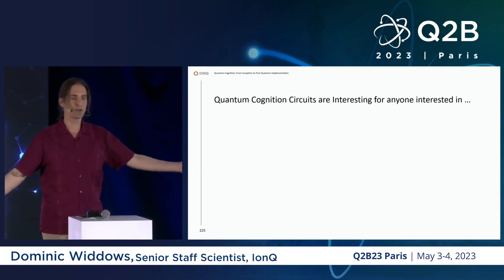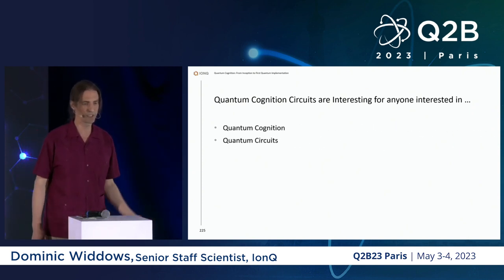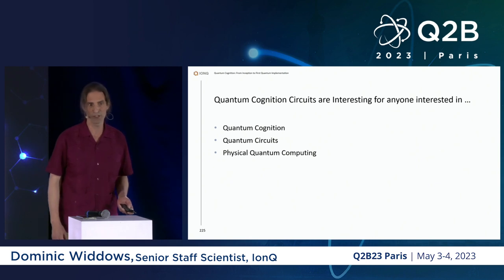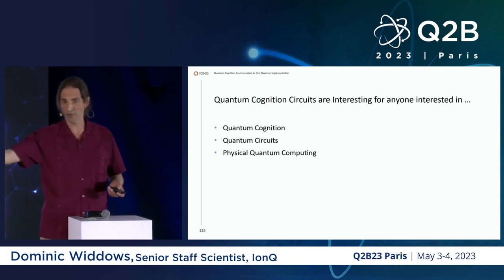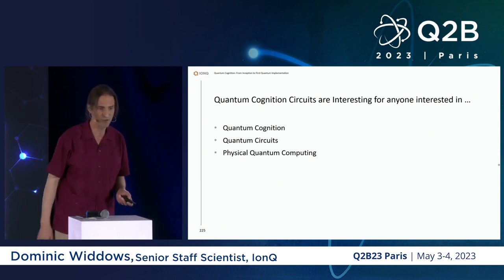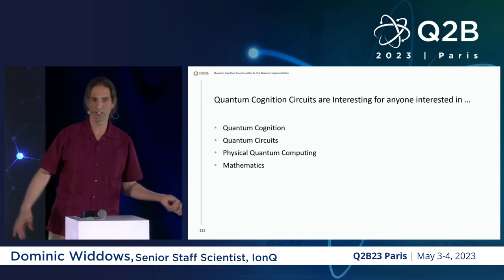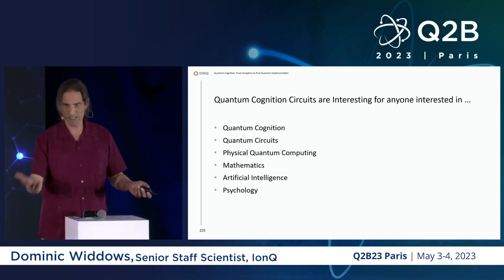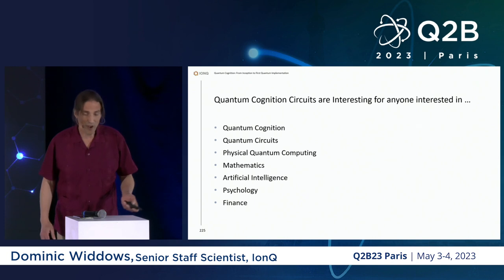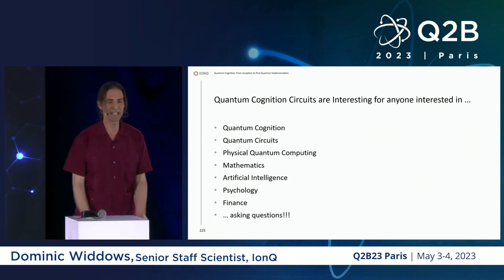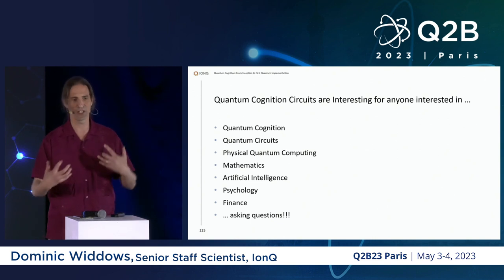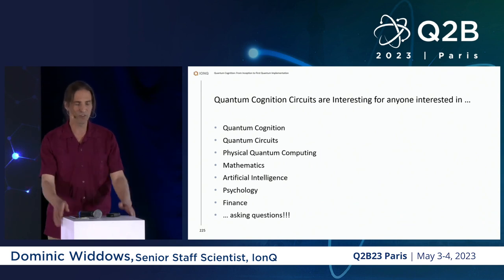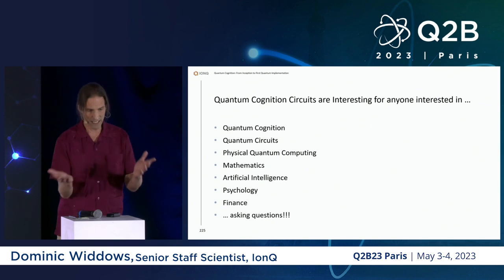Quantum cognition circuits are of interest to anyone working in quantum circuits, physical quantum computing, mathematics, and artificial intelligence. Psychology — because this is about how we think. Finance, because markets behave this way. And anyone interested in the nature of research. Thank you very much for listening and thank you to the organizers.